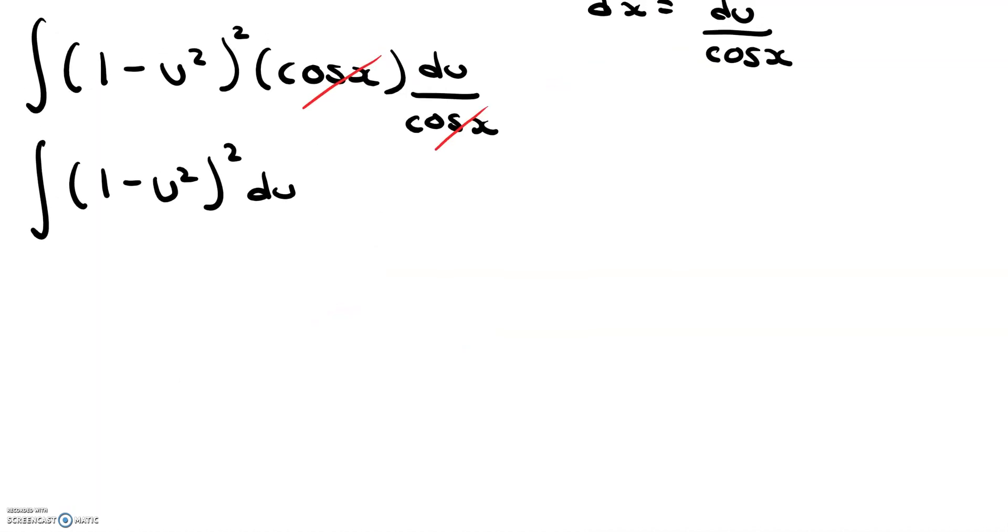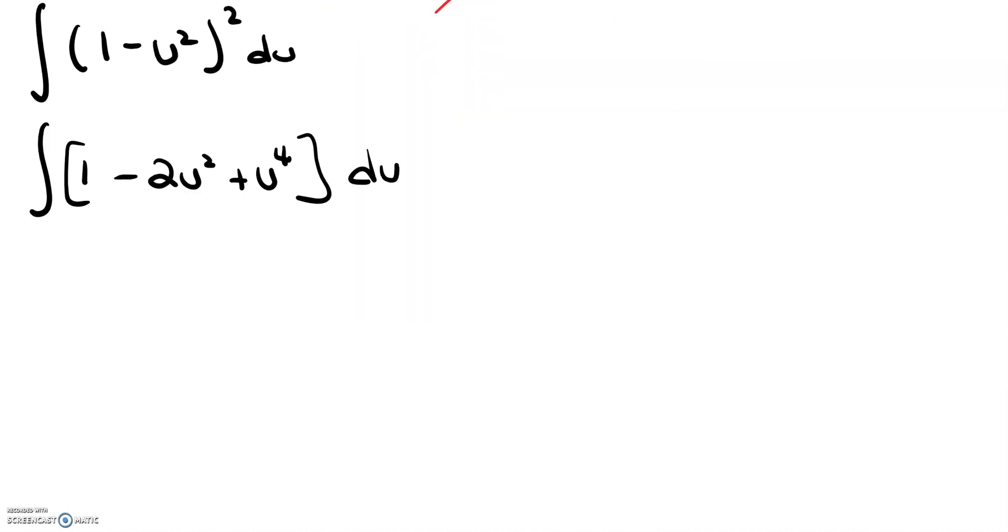And then if we expand this 1 minus u squared to the power of 2, we get 1 minus 2u squared plus u to the fourth, and then that is du.